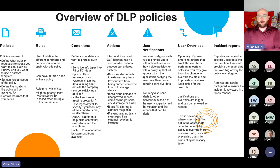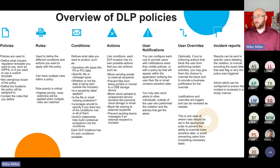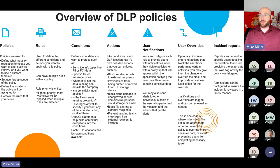Looking at DLP policies, there's a flow to what you're configuring. You have the policy itself where you're setting the name, telling it what content you're looking for — whether it's a pre-built template like HIPAA or the U.S. Patriot Act, or a custom configuration. You're setting the scope of users and groups within the DLP policy and defining what locations the policy is looking at — Exchange, Devices, SharePoint. Those locations then contain your rules, and your rules are where you set your conditions and actions.